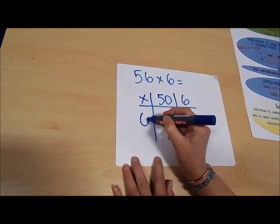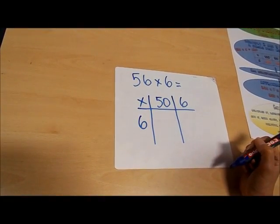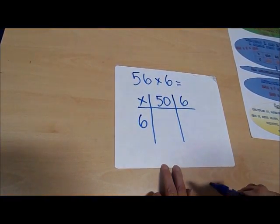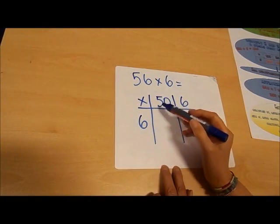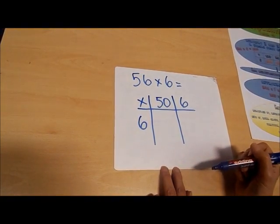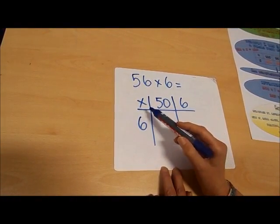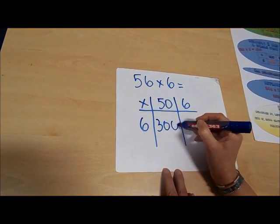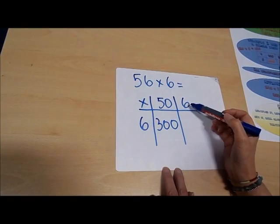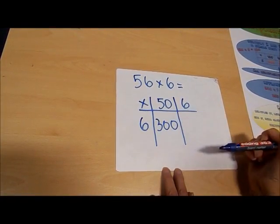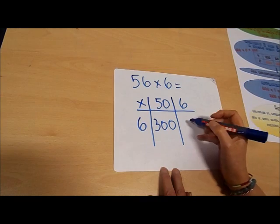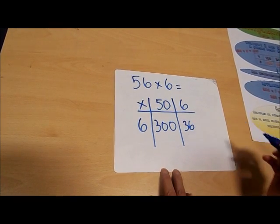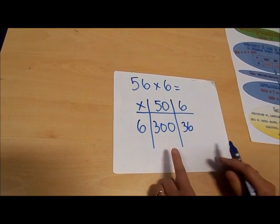So now I'm going to multiply this number by this number. 50 multiplied by 6 is 300. Now I'm going to multiply this number by this number, so 6 multiplied by 6 is 36.